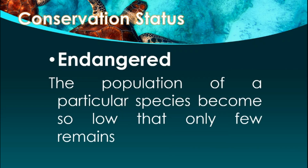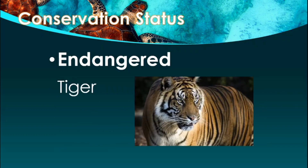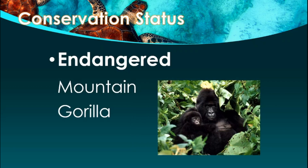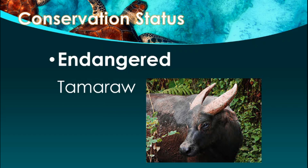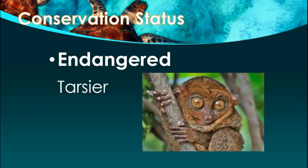Let us now proceed with endangered species. When you say endangered, the population of a particular species becomes so low that only a few remain. Some examples found around the world and in the Philippines are the tiger, hawksbill turtle, mountain gorilla, Asian elephant, whale shark also known as butanding, the tamaraw found in Mindoro, and the famous tarsier of Bohol.